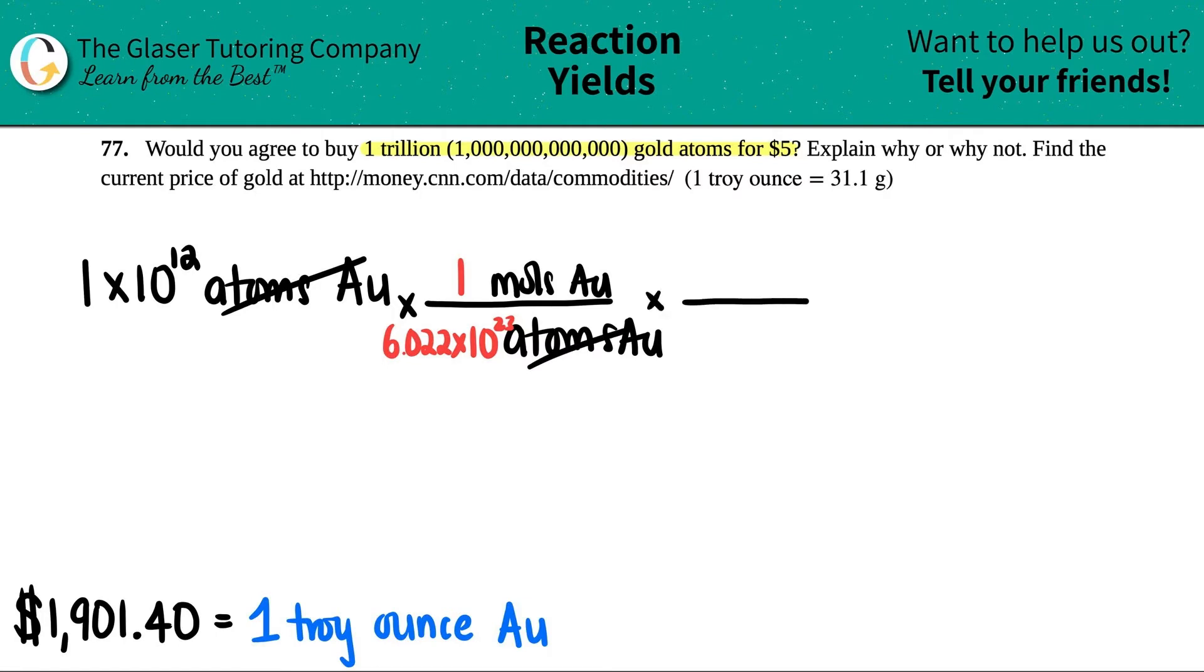Now let's quickly go to grams. Moles of gold on the bottom, grams of gold goes up on top. The molar gram conversion of the same element is on the periodic table, and it's always one mole equals whatever it is on the periodic table. It's 197 grams if you look at gold.